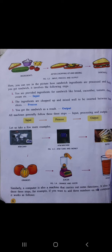Here we have some examples which we use in our daily routine. The first one is how to make a sandwich in terms of input, process, and output. The first step is you are provided ingredients for a sandwich like bread, cucumber, tomato, cheese, and cream as an input — the instructions we give are called input. For making a sandwich, the ingredients are chopped up and mixed well to be inserted between bread slices.